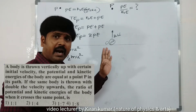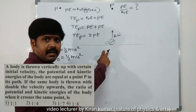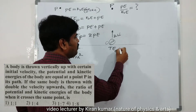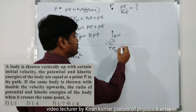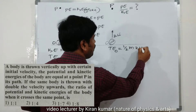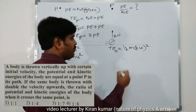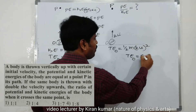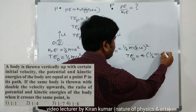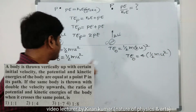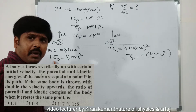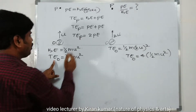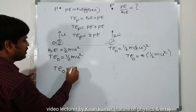For the second condition, the total energy at O is again entirely in the form of kinetic energy: TE = ½m(2u)² = ½m × 4u² = 4 × (½mu²). Now, ½mu² from the first condition equals 2PE, so we can substitute that value.